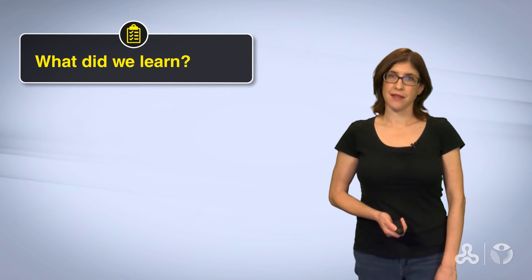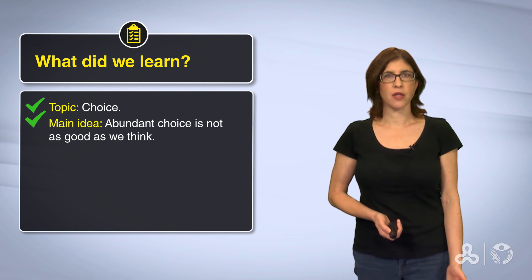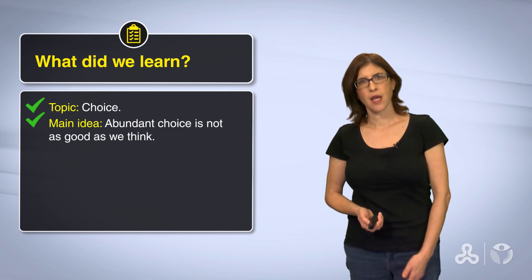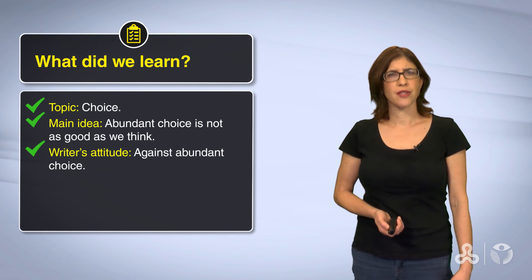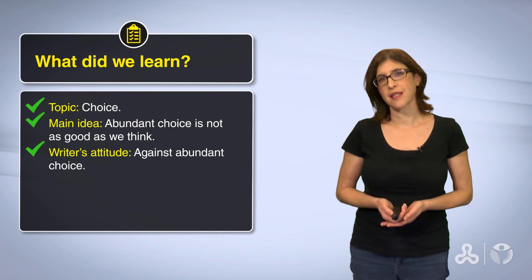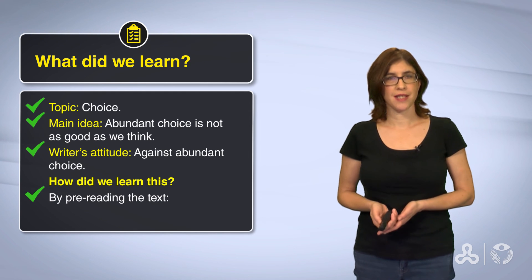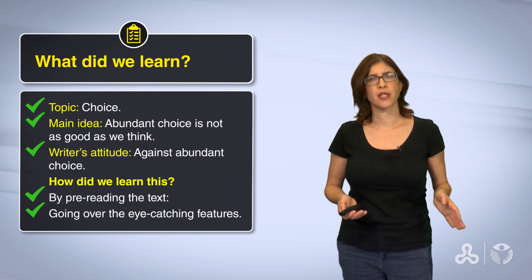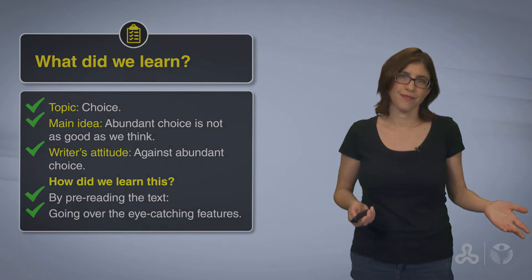We are ending our lesson. So, what did we learn about our text? We know the topic is choice, and we know what the main idea will be: abundant choice — too much choice — is not as good as we think. This shows us the writer's attitude; he will probably be against abundant choice. How did we learn this? By pre-reading the text and going over eye-catching features. All this is based on our predictions. In the next lesson, we will try to see if we were right. Thank you.